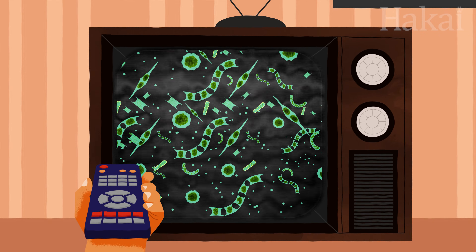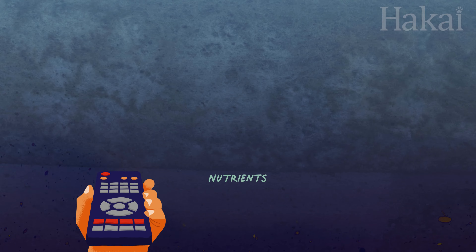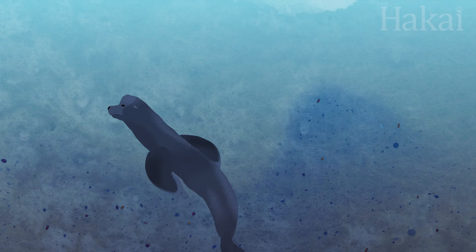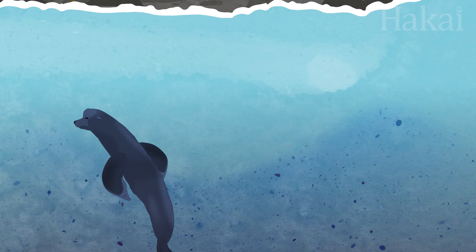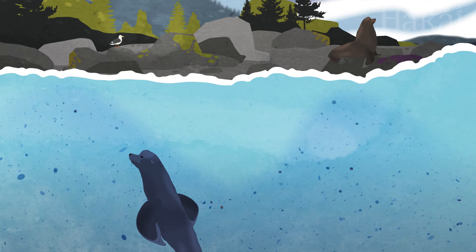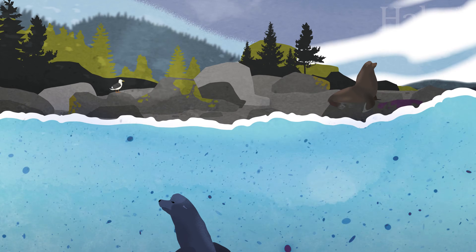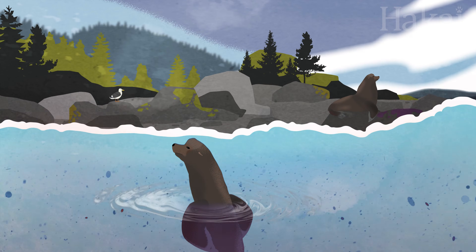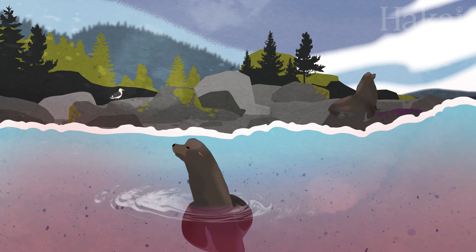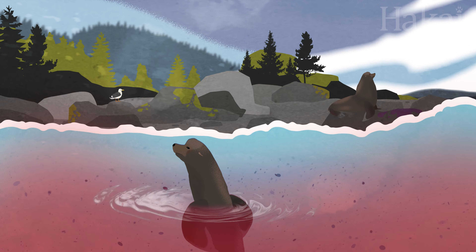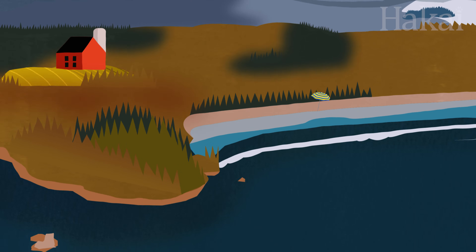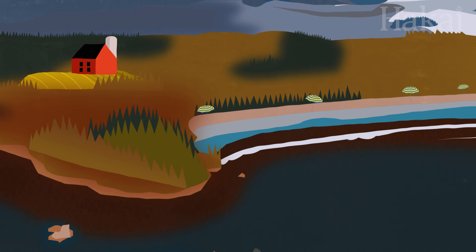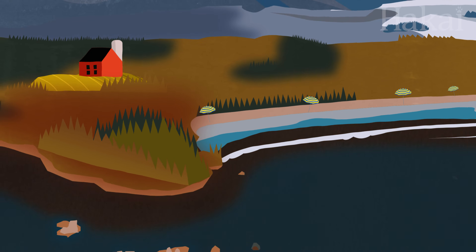These algal blooms can occur when large amounts of nutrients are suddenly introduced to seawater, like when nutrient-rich water from deep in the ocean is quickly brought to the surface by currents, or when fertilizer from land runs into the ocean.